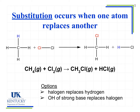There are two options for substitution reactions. The first is what we've seen here — a halogen replaces a hydrogen. This could be Cl2, Br2, I2, or F2; any of those are valid options. The other option is that the OH of a strong base replaces a halogen. So if we already had a halogen on a molecule, we could react it with something like potassium hydroxide or sodium hydroxide, and the hydroxide group would then replace the halogen.